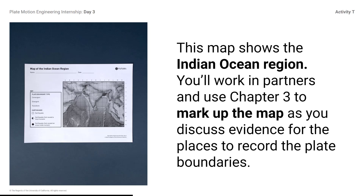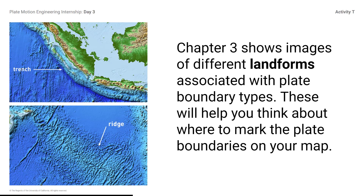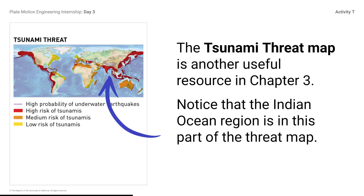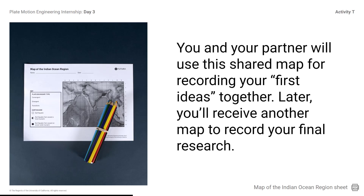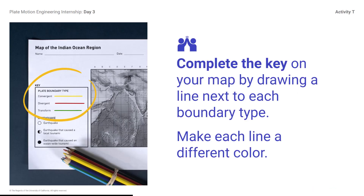This map shows the Indian Ocean region. You will work in partners and use Chapter 3 to mark up the map as you discuss evidence for the places to record the plate boundaries. Chapter 3 shows images of different landforms associated with plate boundary types. These will help you think about where to mark the plate boundaries on your map. The tsunami threat map is another useful resource in Chapter 3. You and your partner will use this shared map for recording your first ideas together. Later, you will receive another map to record your final research. Students, view the map of the Indian Ocean region sheet. Complete the key on your map by drawing a line next to each boundary type. Make each line a different color. Students, review the key for plate boundary types and complete the key.